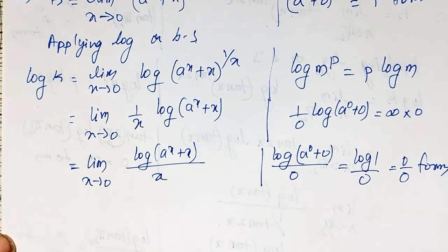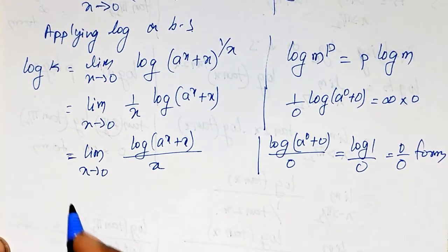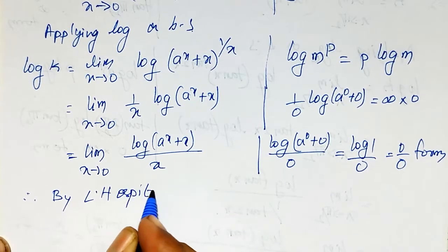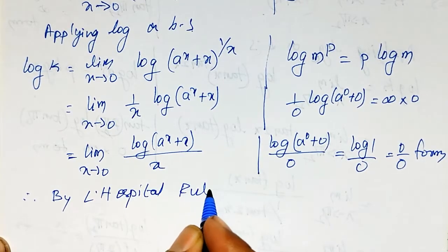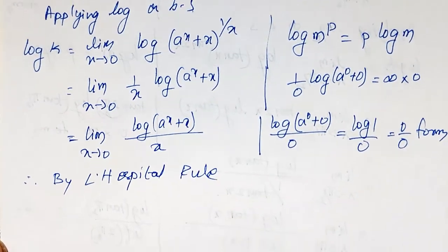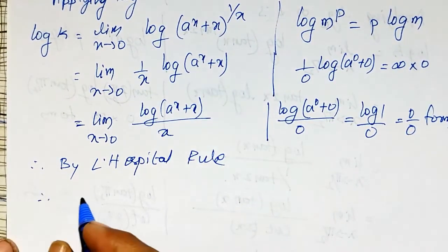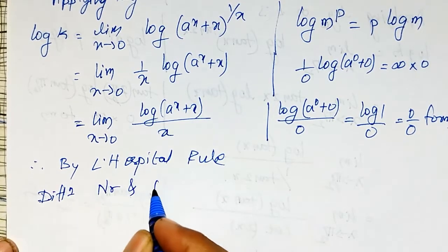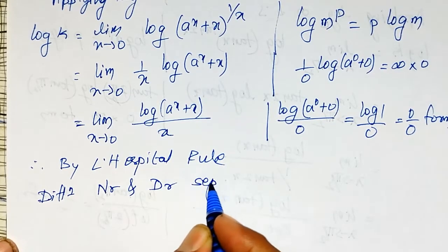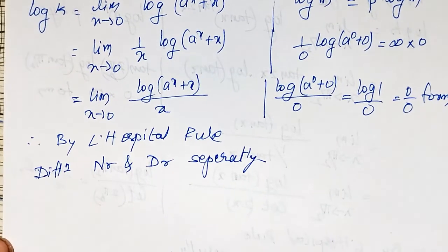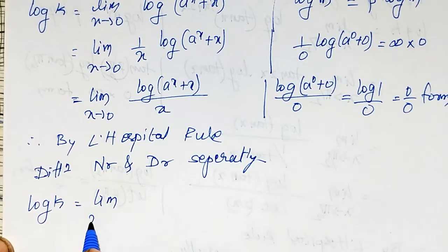As it is now in the 0 by 0 form, I can apply L'Hôpital's rule. Therefore, by L'Hôpital's rule — since it is 0 by 0 form, I differentiate the numerator and denominator separately. This gives: log k is equal to the limit as x tends to 0 of the derivative of the numerator over the derivative of the denominator.